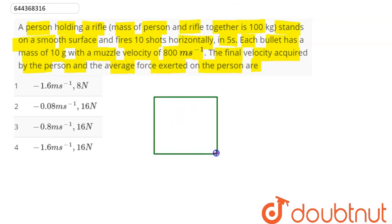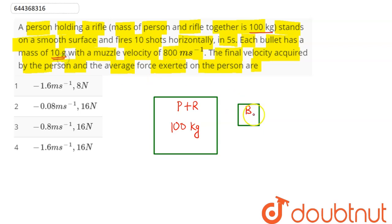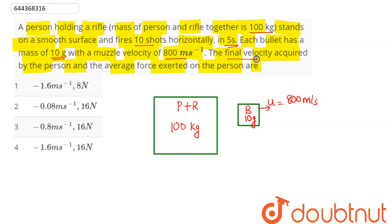Here, suppose this is our person and rifle, and this here is the bullet. Mass of person and rifle together is given as 100 kg, and mass of bullet is given as 10 gram. In 5 seconds, 10 shots were fired with a muzzle velocity given as 800 meter per second — that is the velocity of the bullet. We need to find the final velocity and average force, so we can conserve momentum.